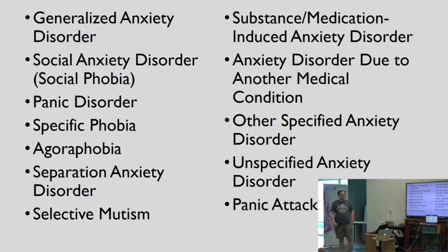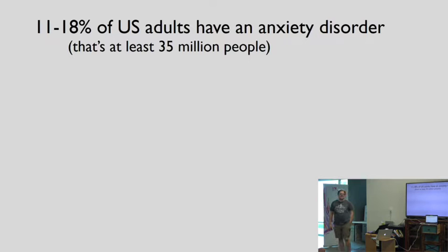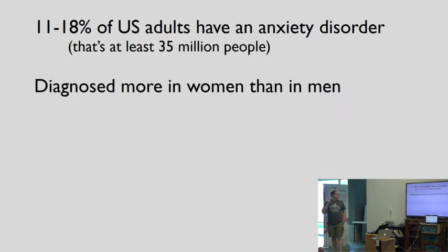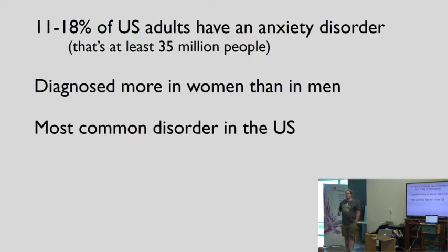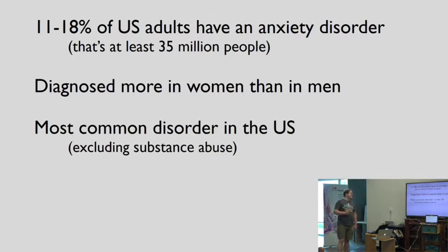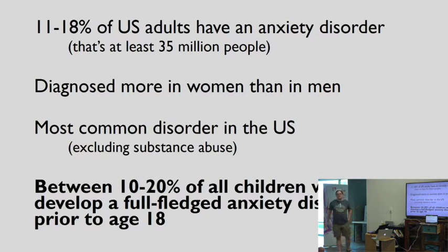The epidemiology of anxiety. Eighteen to eleven percent of U.S. adults have an anxiety disorder. That's about 35 million people. That's any given year. Anxiety disorders are typically diagnosed more in women than in men. It is difficult to know whether that's genetic, whether that's culturally relevant, or whether women just tend to get diagnosed with it more because of the way they behave or the way they're expected to behave. It is one of the most common disorders in the U.S.